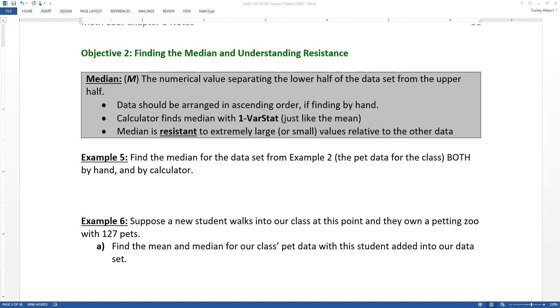The median is the second most powerful measure of center that we're going to learn in this course. There are three that we're going to learn all together, so this is the second one. Now the median is the numerical value that separates the lower half and the upper half of the data set. If you're going to do that by hand, you're going to have to arrange your data in ascending order. So let's look at the pet data again for this example, so that'll help clarify what's going on here.